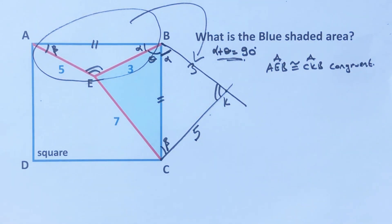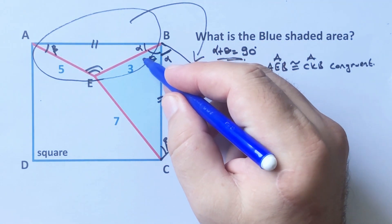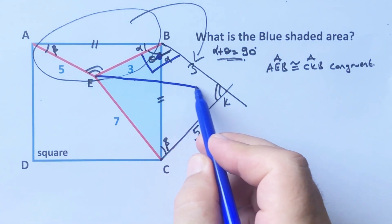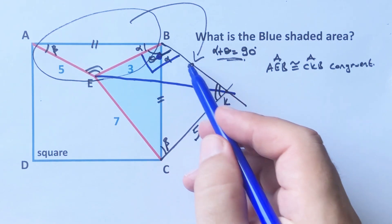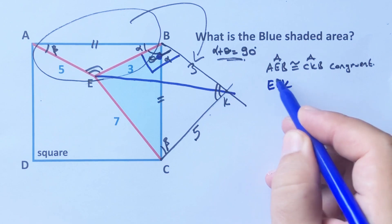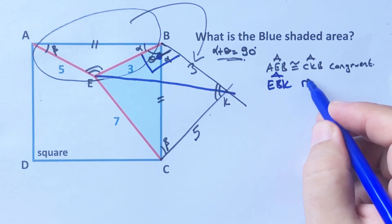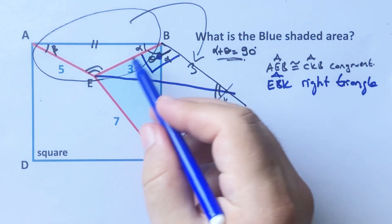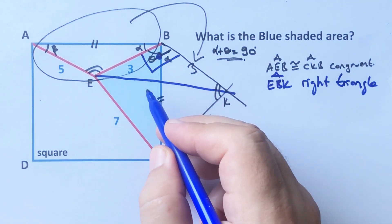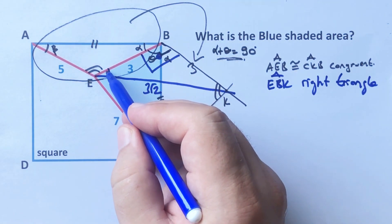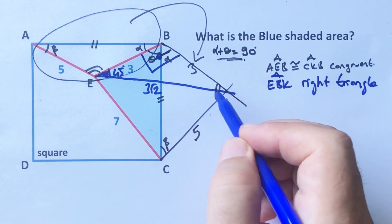And then we know that alpha plus theta equals 90 degrees, so this angle must be 90 degrees. If we connect E and K points like this, we get an isosceles right triangle. If this triangle is an isosceles right triangle, that means the base angles is 45 degrees and hypotenuse must be 3 root 2. So here must be 45 degrees.